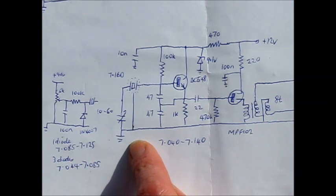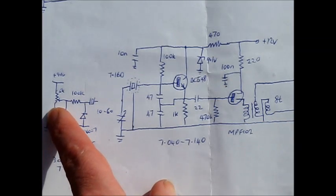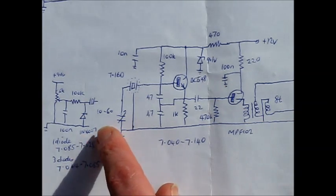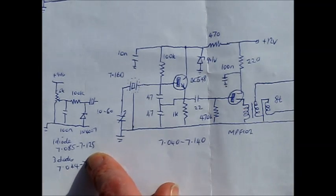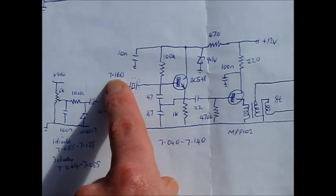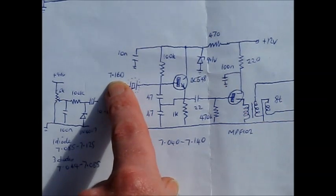If you don't want the variable capacitor because the tuning is too finicky, you can substitute a variable resistor and some diodes operating as varactors. In this circuit, one 1N4007 gives you 7.085 to 7.125 with a 7.160 MHz ceramic resonator.